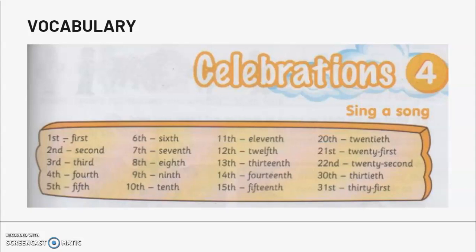So, I will play the CD again, and then you follow along, you read along. Ready. Module 4. Celebrations. Sing a song. Vocabulary. First. Second. Third. Fourth. Fifth. Sixth. Seventh. Eighth. Ninth. Tenth. Eleventh. Twelfth. Thirteenth. Fourteenth. Fifteenth. Twentieth. Twenty-first. Twenty-second. Thirtieth. Thirty-first.